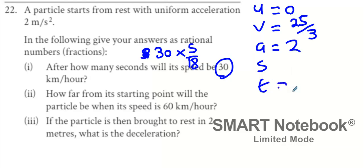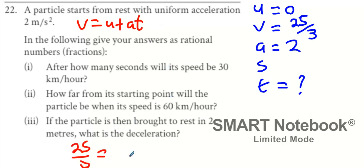And they're looking for time. So what formula do you think I should use for this one? I have V, U, and A, and I'm looking for T. Which formula do you think I should use? V equals U plus AT is one of the formulas. So 25 over 3 equals 0 plus 2T. Then divide 25 over 3 by 2 and you get 25 over 6 seconds.